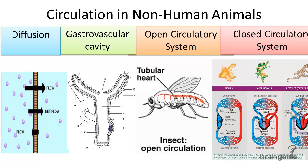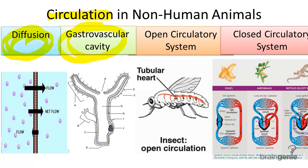Let's compare circulation in non-human animals. Circulation in animals is the distribution of nutrients absorbed by the digestive system, along with gases and wastes. Important nutrients, gases, and wastes that must be circulated or transported include food, water, oxygen, and carbon dioxide. Simple animals only require a gastrovascular cavity or just simple diffusion for circulation.